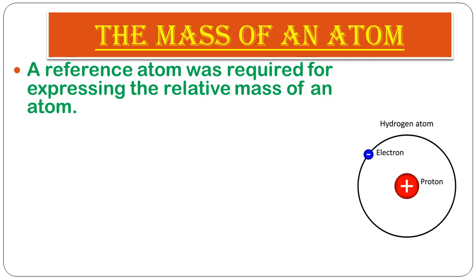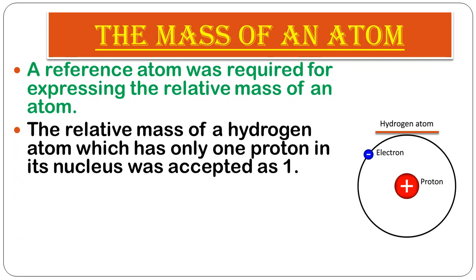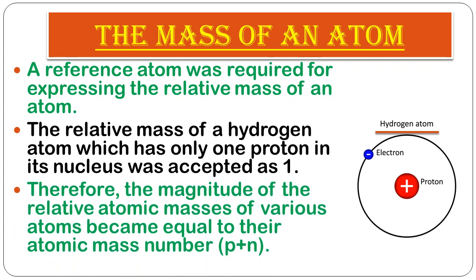The relative atomic mass of hydrogen, which has only one proton in its nucleus, was accepted as one. Therefore, the relative atomic masses of various atoms became equal to their atomic mass number — that is, the sum of protons and neutrons.